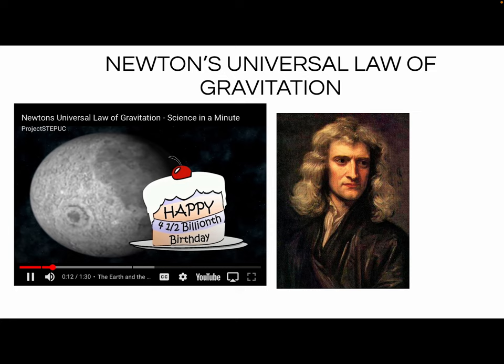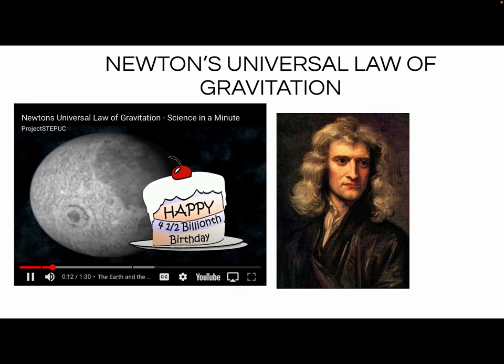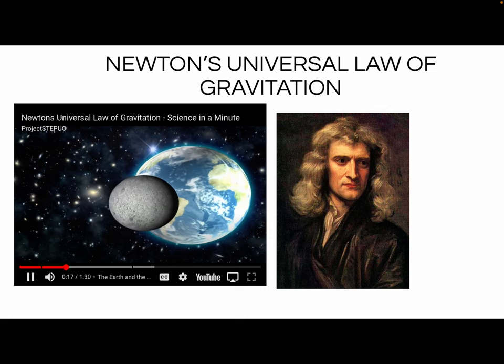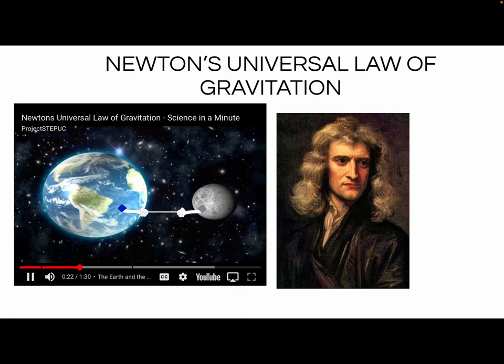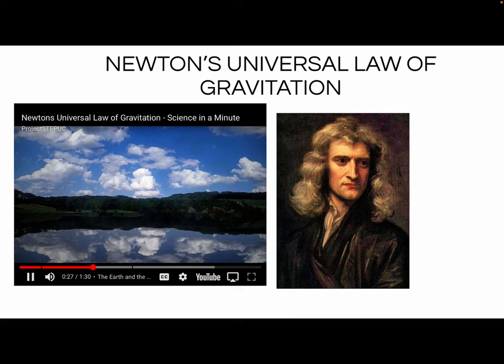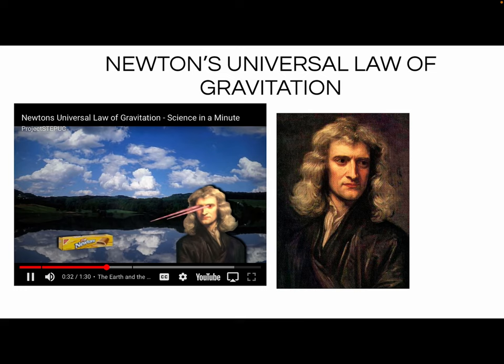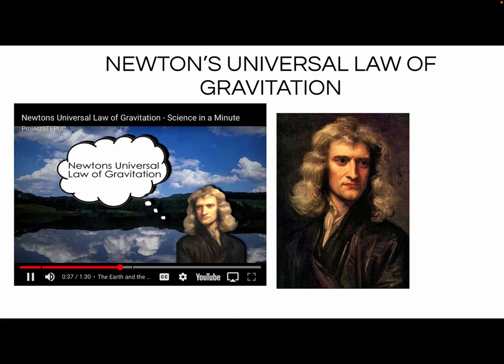The Earth and the Moon have existed for approximately four and a half billion years, and during that time the Moon has been orbiting the Earth in a choreographed circular dance. What is not so evident is that the Earth and the Moon are in a violent game of tug-of-war, each aggressively pulling on each other. The Moon's pull is evident in the rise and fall of tides in the Earth's oceans. But what dictates this relationship?